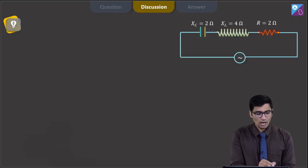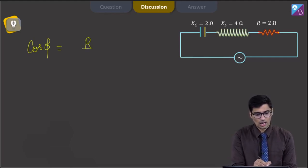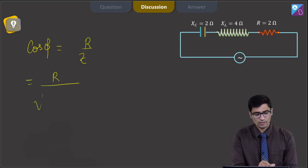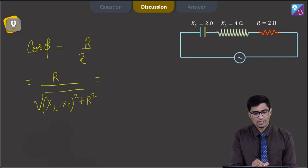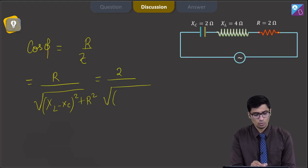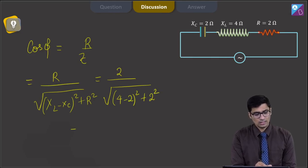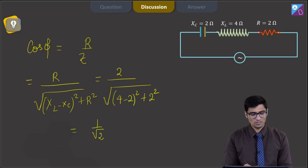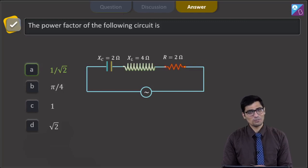Dear students, the power factor cos φ can be written as R by Z, where Z is the impedance of the circuit. This can be written as R divided by under root of (X_L minus X_C) whole square plus R square. R has a value of 2; X_C and X_L have values of 2 and 4 respectively. So this will be 2 divided by root of (4 minus 2)² plus 2², giving us a value of 1 by root 2. Therefore the power factor is 1 by root 2, and the correct answer is option number A.